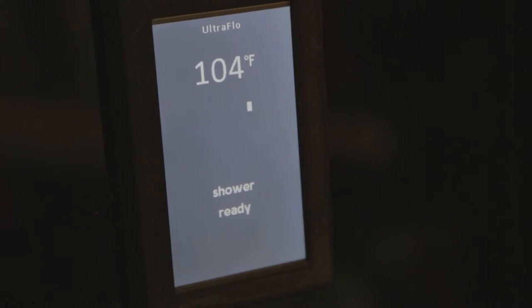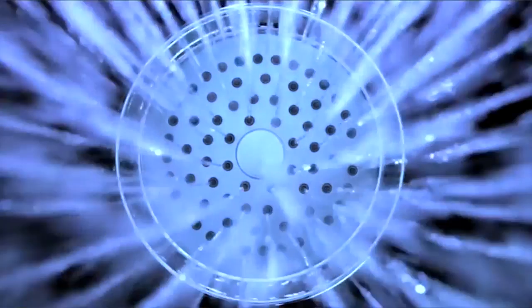You can also have a system where it will track all the gallons and minutes used by each faucet. And if you've noticed somebody like a teenager in the bath taking too long in the shower, you can restrict that shower down to going on for so many minutes.